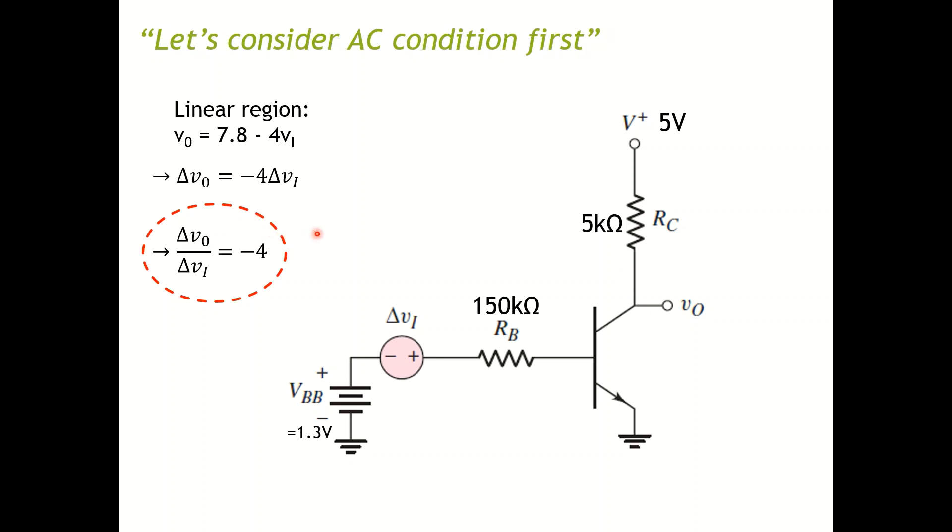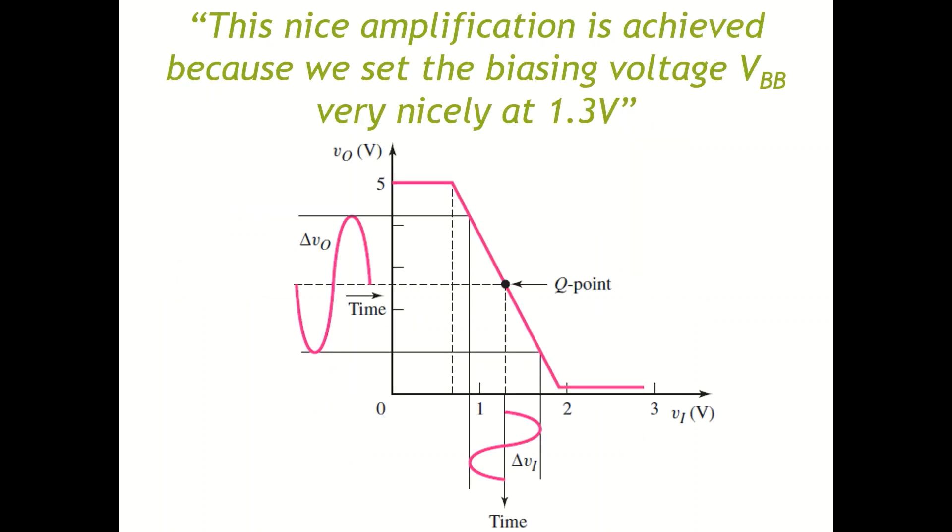In practice, more often you will be asked to design a circuit that has a specification. For example, you have to do a minus 10 amplification factor. Then what you want to do is you want to decide what to put in for your RB, your RC, and also a very important factor is your bias, and I will explain why it's important. So this nice amplification is achieved because we actually put our bias right here at 1.3 volts. Everything will be nicely done. As long as your voltage doesn't cross this area, nothing is going to go wrong.